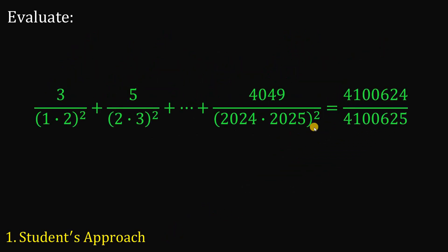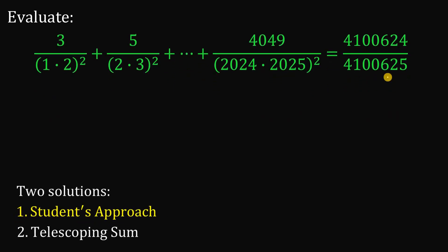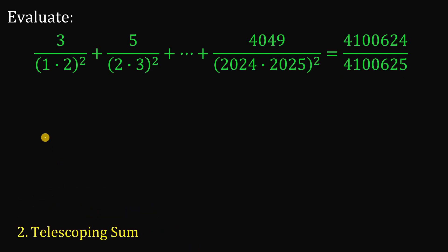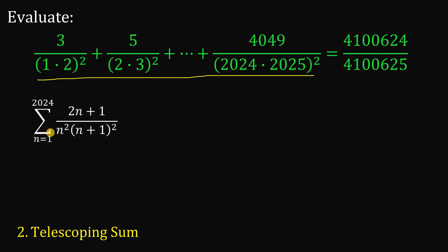Using the student approach we get this answer. Now for the second approach: the telescoping sum. We will use the concept of summation notation. Using the observed pattern, we can rewrite each term as the summation of (2n + 1) over n squared times (n + 1) squared, from n equals 1 up to 2,024. We can also rewrite this term as 1 over n squared minus 1 over (n + 1) squared.